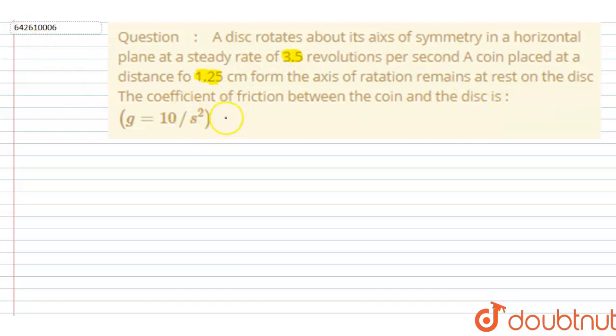So here, the centripetal force will be friction force acting on the disk. I will write the friction force is equals to m omega square r. Now, we know this maximum friction force is simply F max equals mu m g.